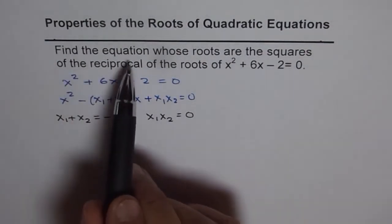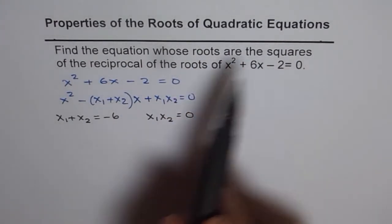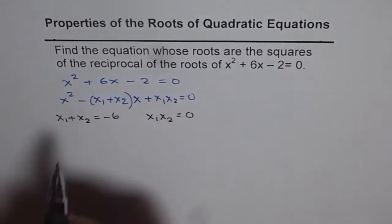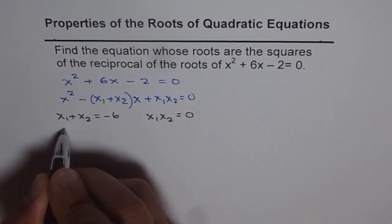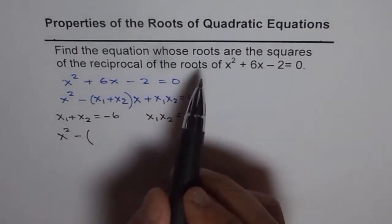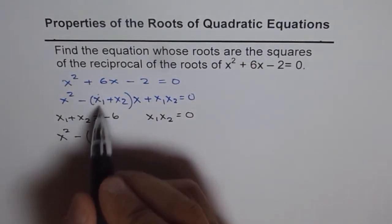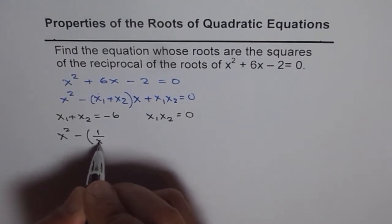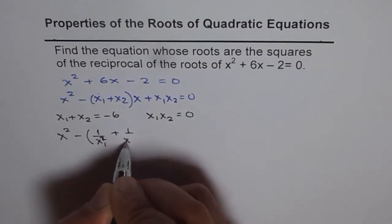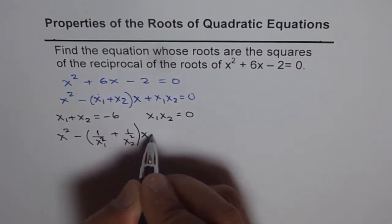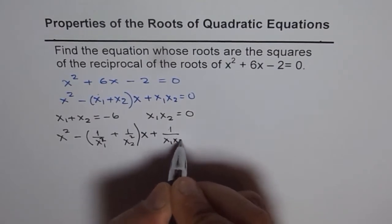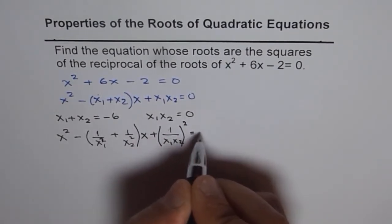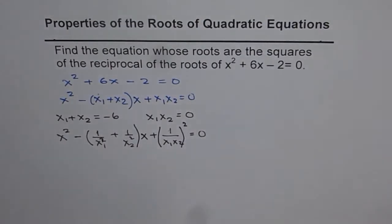Now the question is to find the equation whose roots are the squares of the reciprocal of the roots. The reciprocal of x1 is 1/x1, so the new equation takes the form x² - (1/x1² + 1/x2²)x + (1/(x1·x2))² = 0. That is the required equation we need to find.